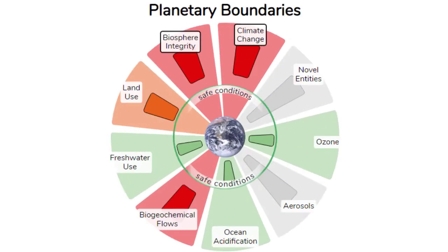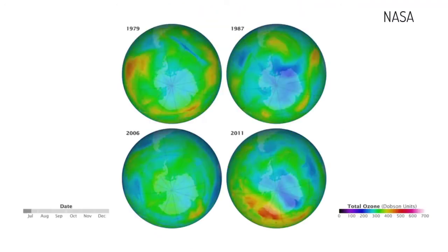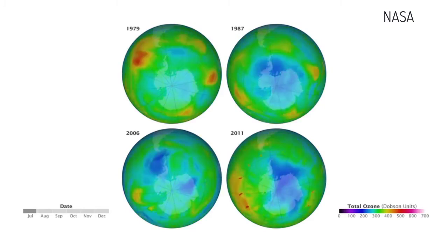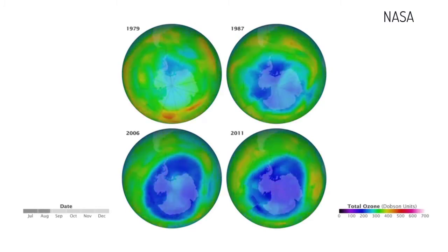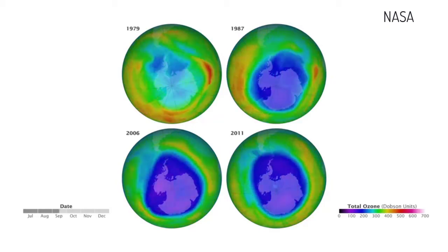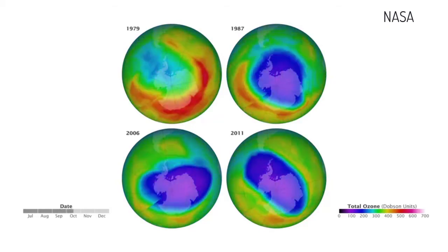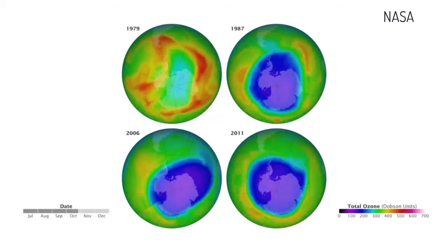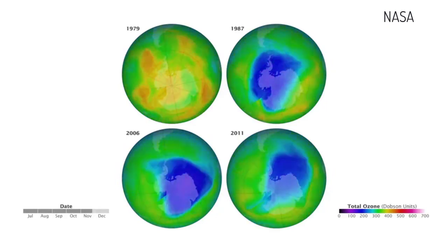Just because we have exceeded the planetary boundary for these Earth systems does not mean that there is no hope. In the 1970s, certain chemical refrigerants released into the atmosphere started to deplete the ozone layer, making risk to that system more likely. However, humanity was able to stop the use of these chemicals and allowed the ozone hole to slowly start to repair itself.